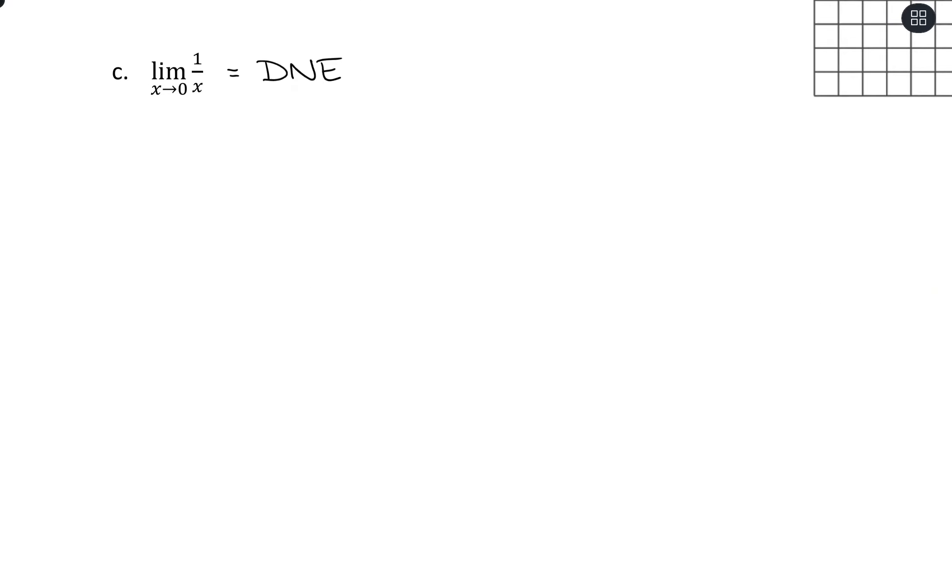If they matched up in the same direction, like let's say we were dealing with 1 over x squared, our function that looks like this, and I wanted to take the two-sided limit. From the left, we would be going to positive infinity. From the right, we would also be going to positive infinity.